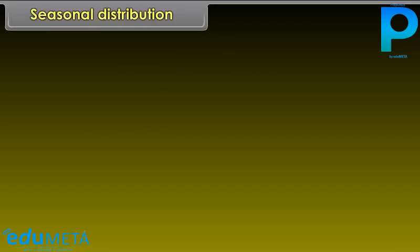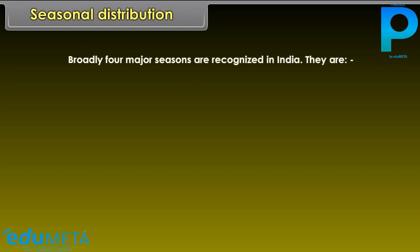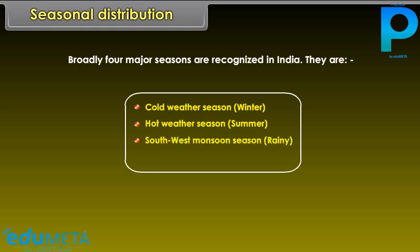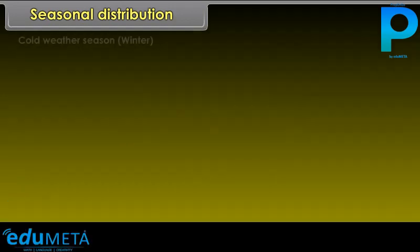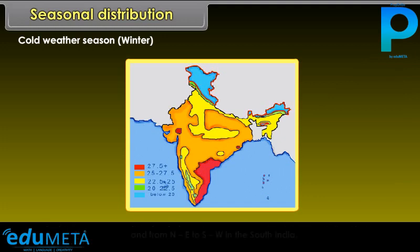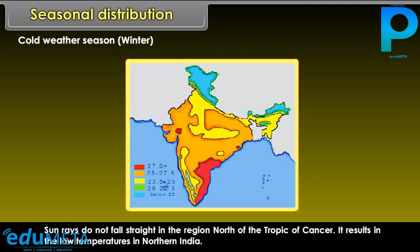Broadly, four major seasons are recognized in India: cold weather season (winter), hot weather season (summer), southwest monsoon season (rainy), and season of retreating monsoon. In winter, cold dry winds blow from the northwest to the southeast in north and northwest India, and from northeast to southwest in south India. Sun rays do not fall straight in the region north of the Tropic of Cancer, resulting in low temperatures in northern India.